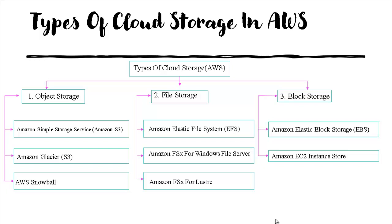Under object storage, you can see Amazon Simple Storage Service (S3) and also Amazon Glacier S3 and AWS Snowball — these all are object type storage. Under file storage, there are Amazon Elastic File System (EFS), Amazon FSx for Windows Server, and Amazon FSx for Lustre. Under block storage, there are Amazon Elastic Block Storage (EBS) and Amazon EC2 instance stores.